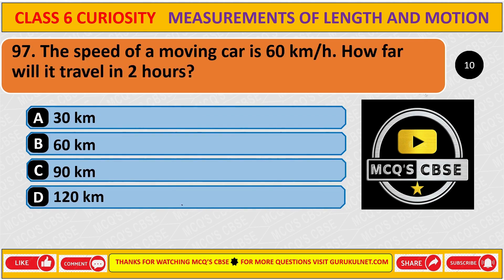The speed of a moving car is 60 km per hour. How far will it travel in two hours? The correct answer is D, 120 km.